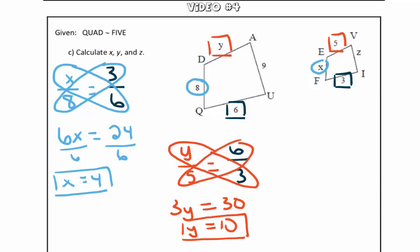Last but not least, we have z. If we look at z, z corresponds with 9 in the other quadrilateral. So to set up our proportion, we are going to have z over 9 is equal to 3 over 6, to keep the ratios in the same order. Since we have z in the numerator for the first ratio, we also want to use 3 in the numerator of the second ratio so that they are coming from the same quadrilateral.